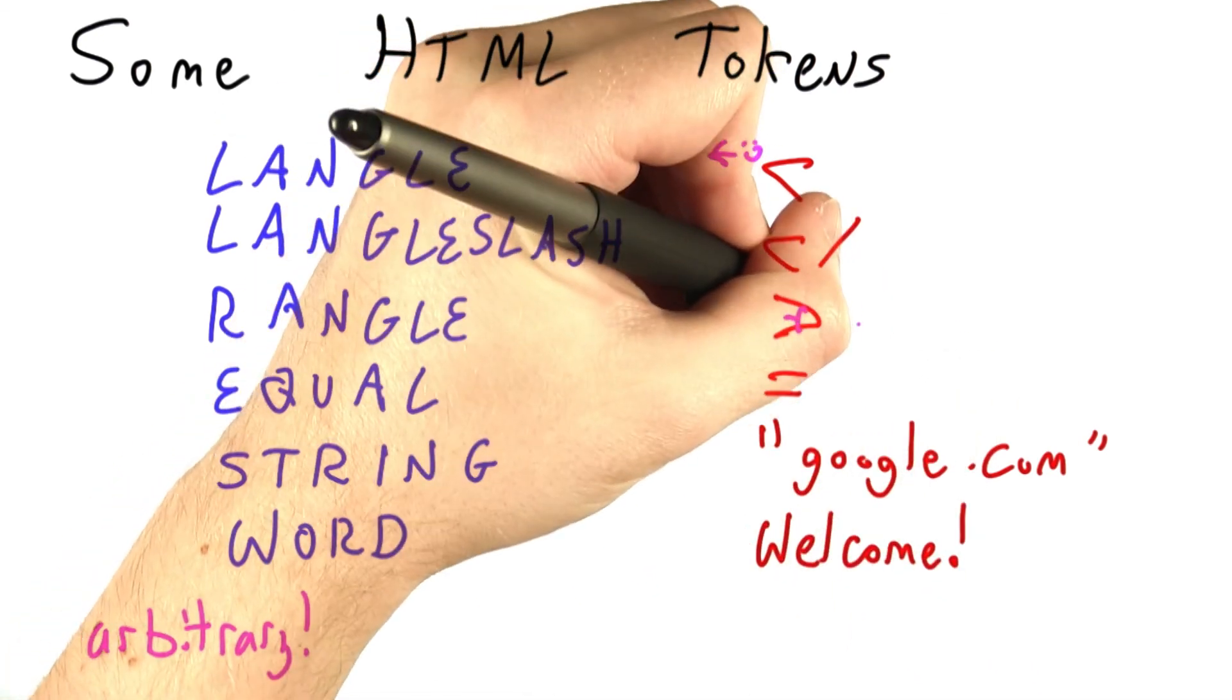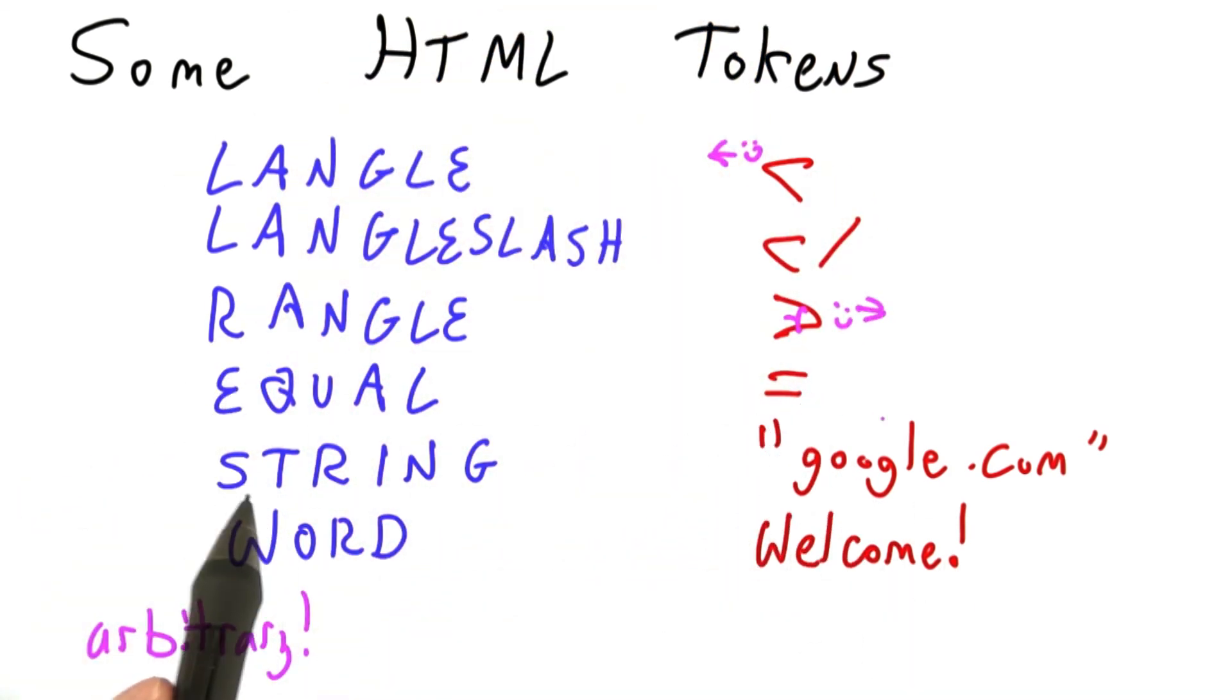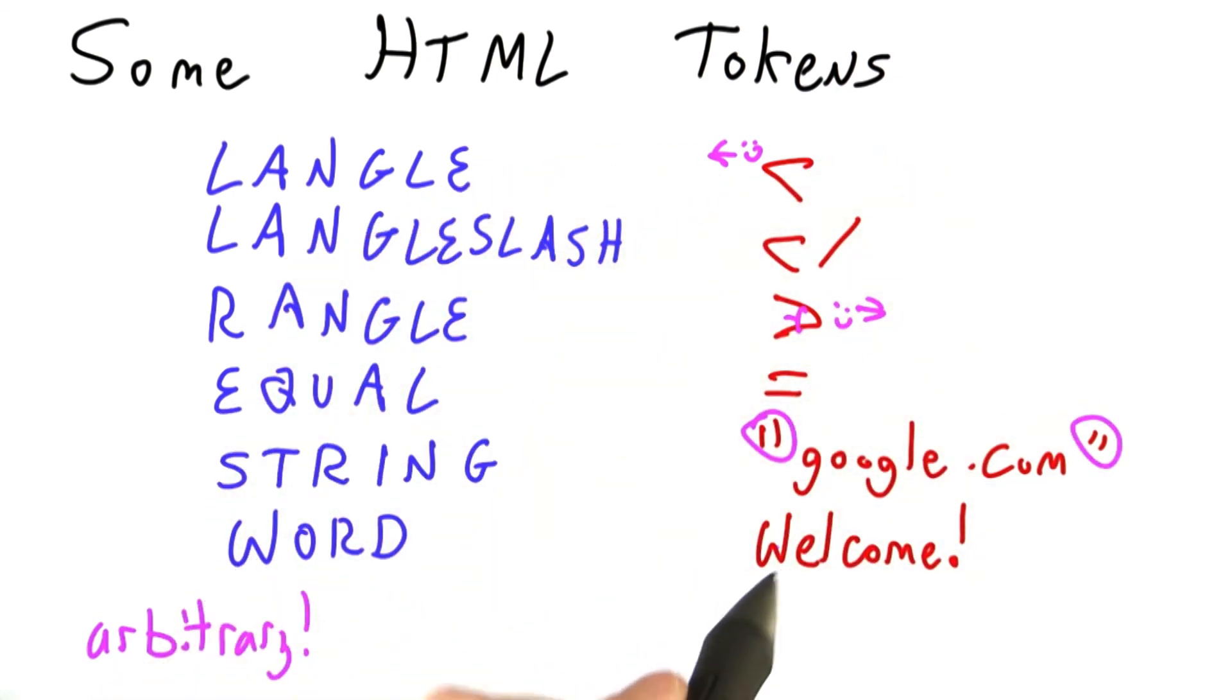Here's the angle. Here's the face. The equal sign is just an equal sign. A string is going to have double quotes around it. And a word is anything else. Welcome to my web page. Punctuation like that.